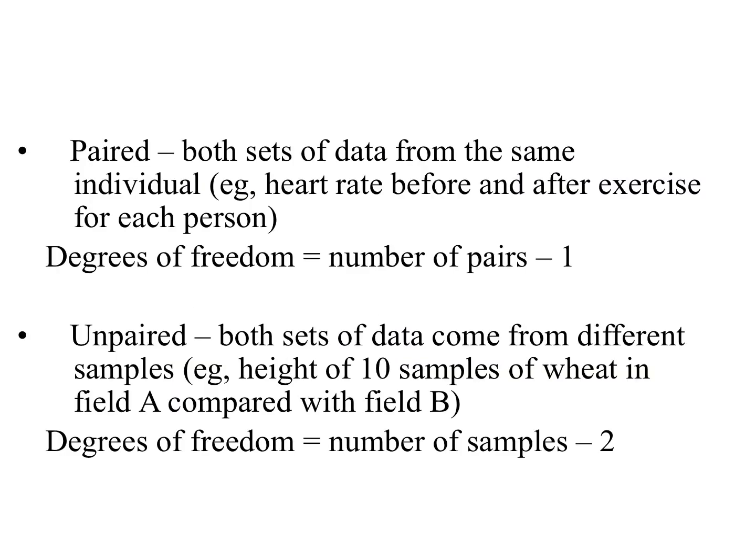To find the correct critical value, we first need to establish the degrees of freedom. For a paired t-test, both sets of data come from the same individuals, so you look at how many pairs or individuals you have and subtract 1. With 8 individuals, degrees of freedom = 7. For an unpaired test with 8 in each group (16 total), you would subtract 2 instead. Since our data is paired, our degrees of freedom is 7.